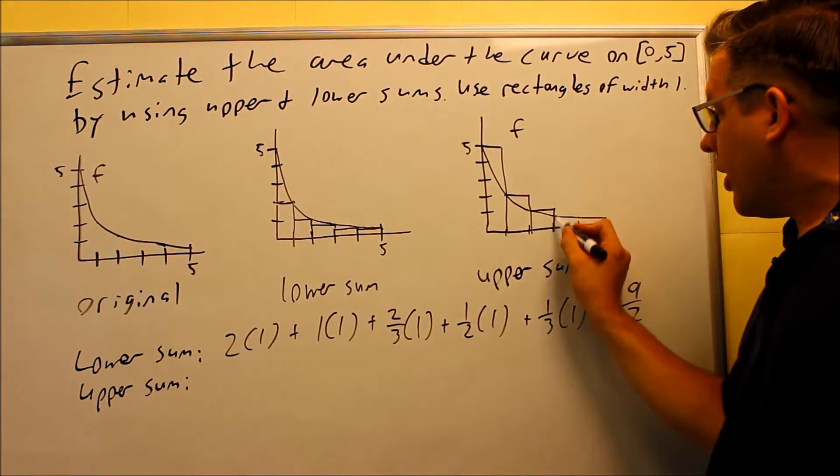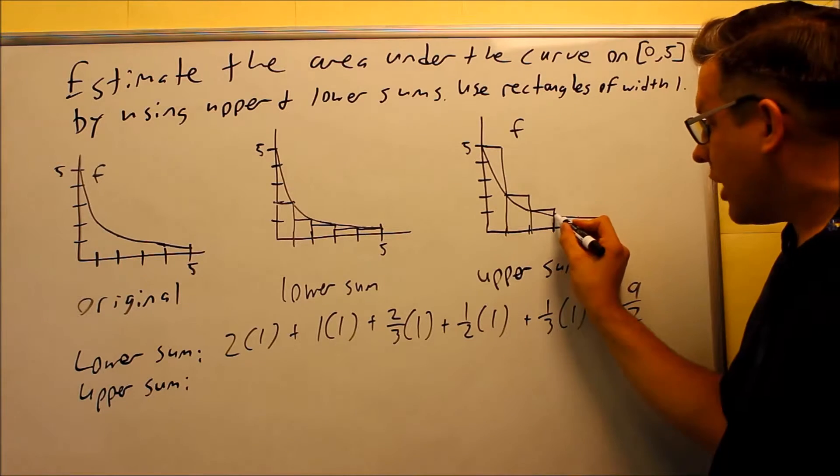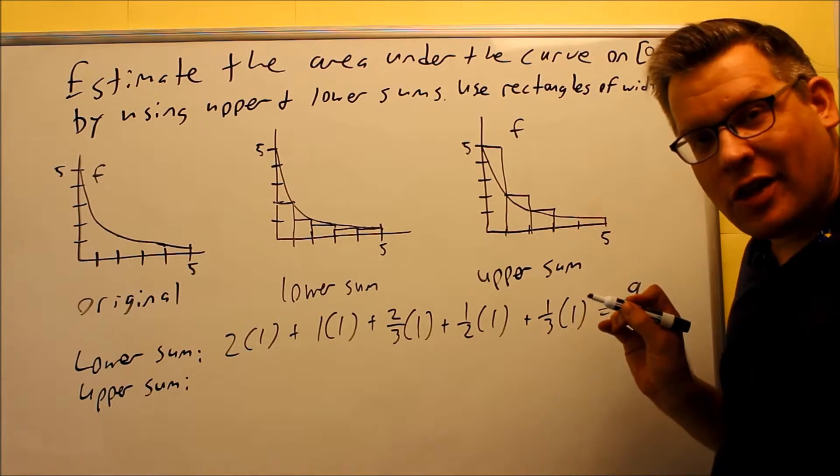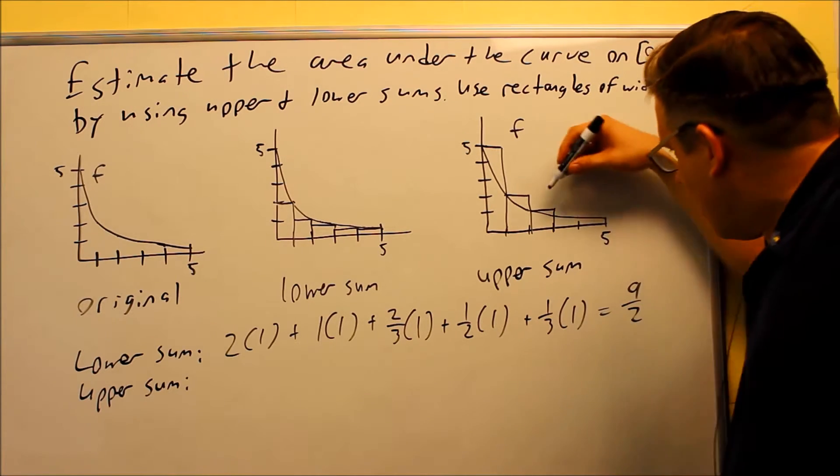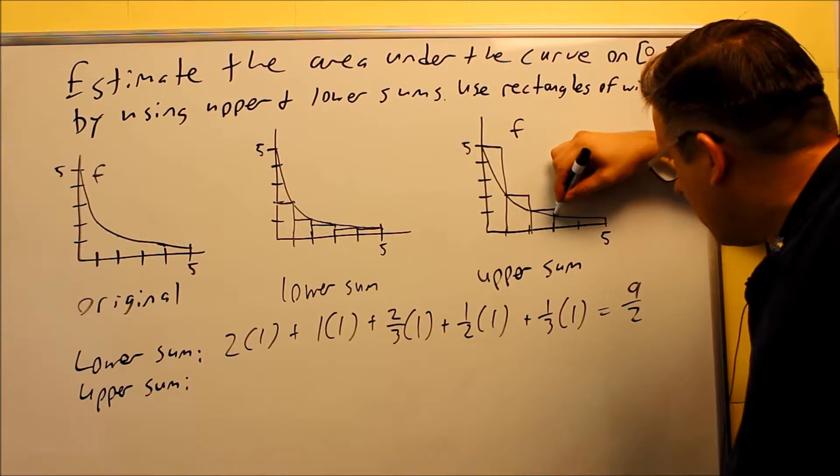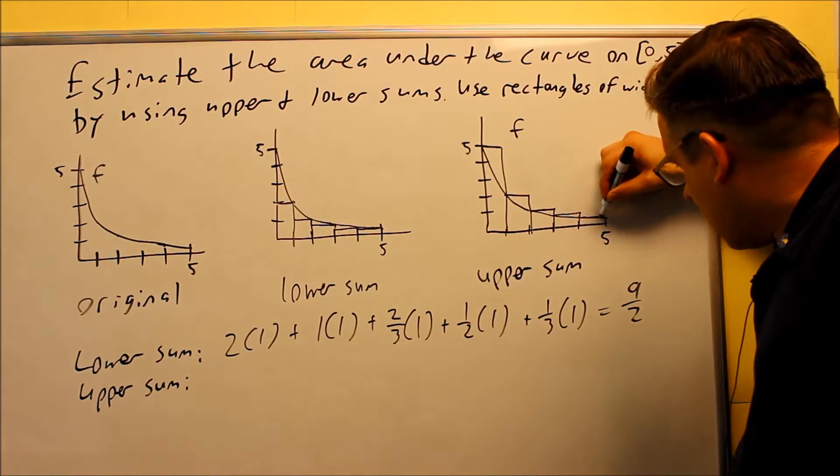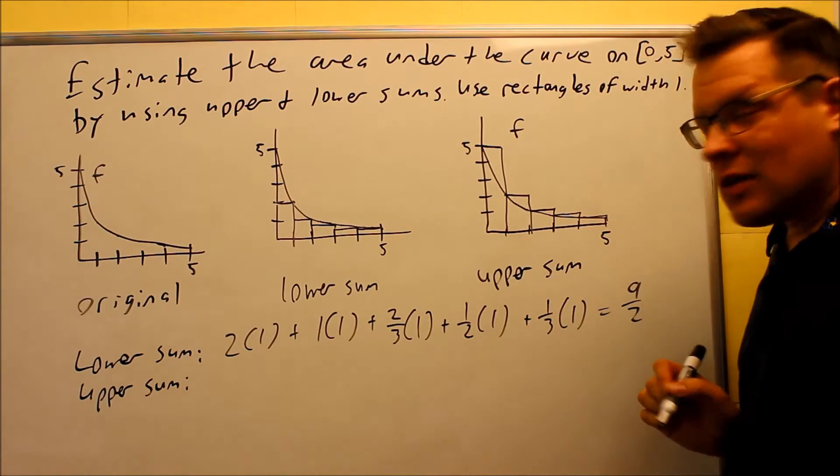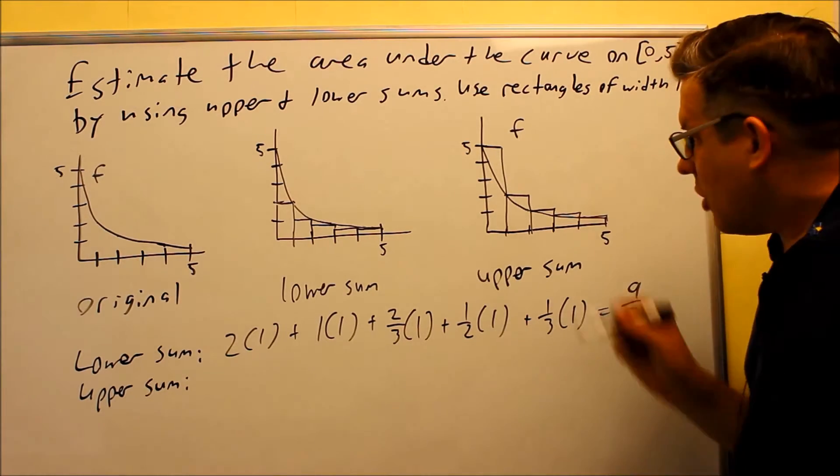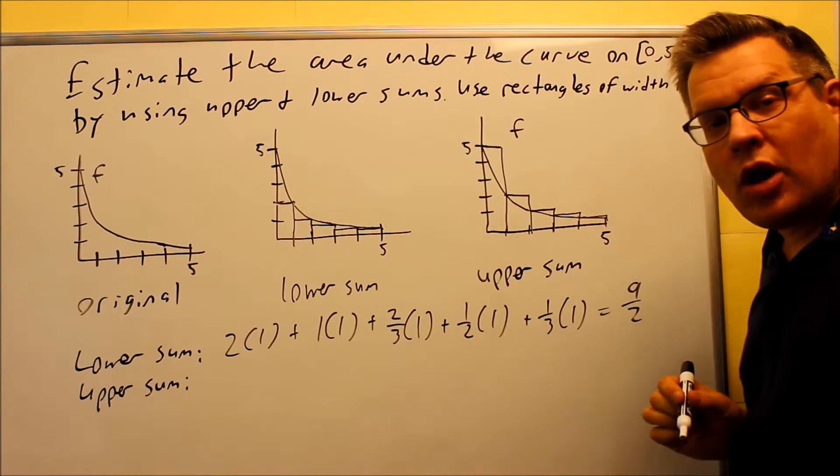We're basically just looking at where this line intersects the curve, and that determines our height for the next one. This one's going to go across like this. Then we have the last one going across like that. So this would be your upper sums, all the rectangles are falling above the curve.